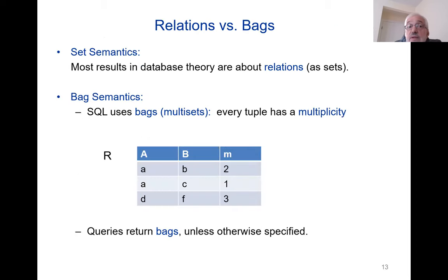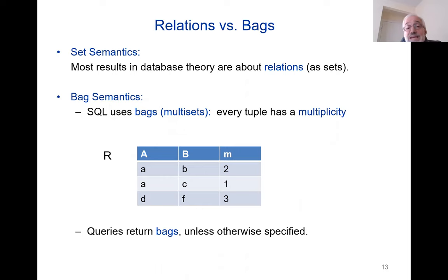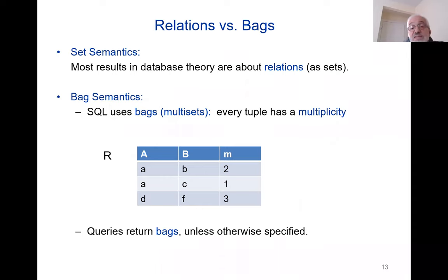The fact of the matter is that all this discussion assumes we're using set semantics — in terms of semirings, it assumes we're working over the Boolean semiring. Most results in database theory are about relations as sets. But database systems, and SQL in particular, do not use set semantics — they use bag semantics. Bag semantics is evaluation over the semiring of natural numbers with plus and times. SQL deals with bags: a bag is simply a set of tuples each of which comes with a multiplicity.